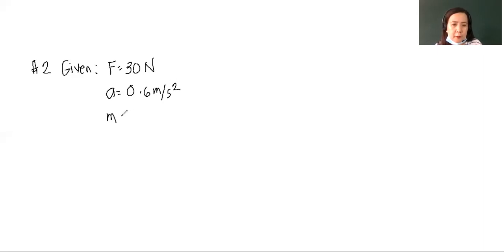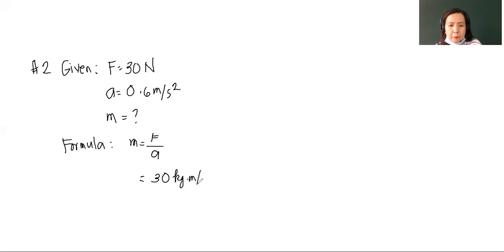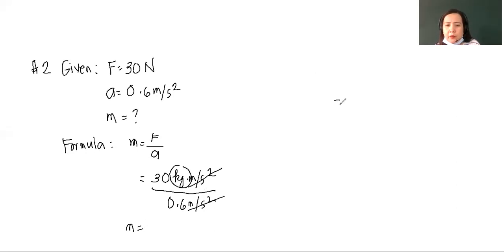This time we are looking for the mass of the skater. The formula for mass is mass is equal to force divided by acceleration. Let us now substitute: 30 — please change N to kilogram meter per second squared — divided by 0.6, so that kilogram is the unit that will be left. In your scratch paper, divide 30 by 0.6: move the decimal point to the right, so 30 divided by 6 gives you 5.